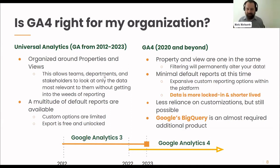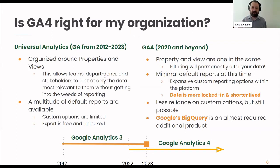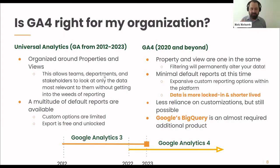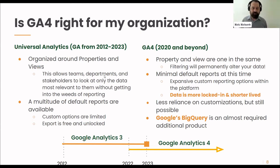A key point: data is more locked in and shorter-lived. As part of the privacy concerns and GDPR, there's an expiration on a lot of data that gets collected. That was technically a thing in Universal Analytics too, but many people would disable it because Google said they'd just keep your data forever. Now there are lawsuits about that. Not only can the data expire and you can do nothing about it other than export it to BigQuery, the data is more locked in.